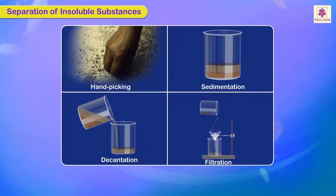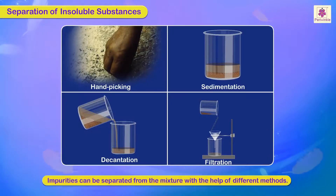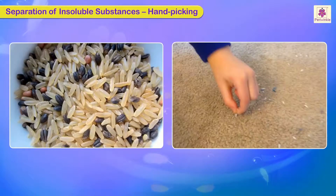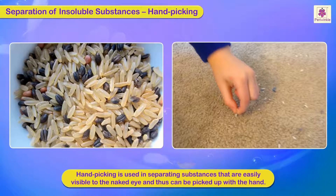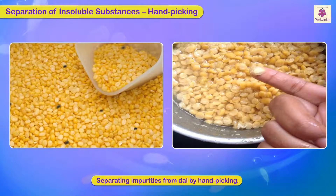Separation of insoluble substances: impurities can be separated from a mixture using different methods. The simplest is hand picking. This method is used for separating substances that are easily visible to the naked eye and can thus be picked up by hand. Things like twigs, leaves, and other larger impurities can be separated from dal kept on a plate by simply hand picking.